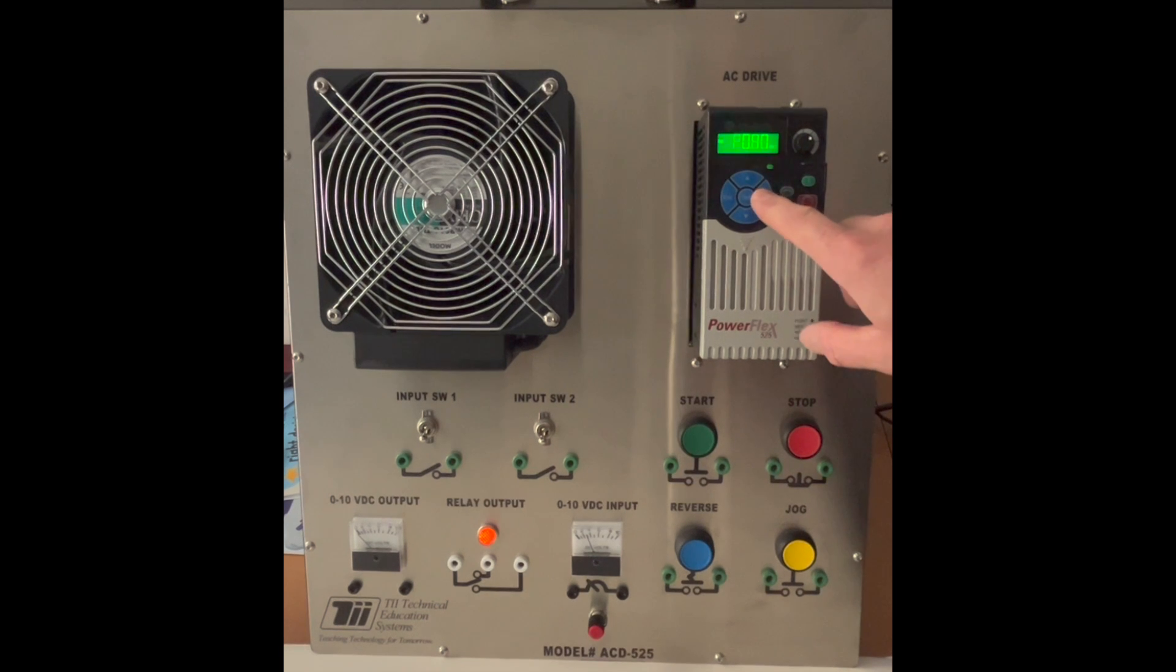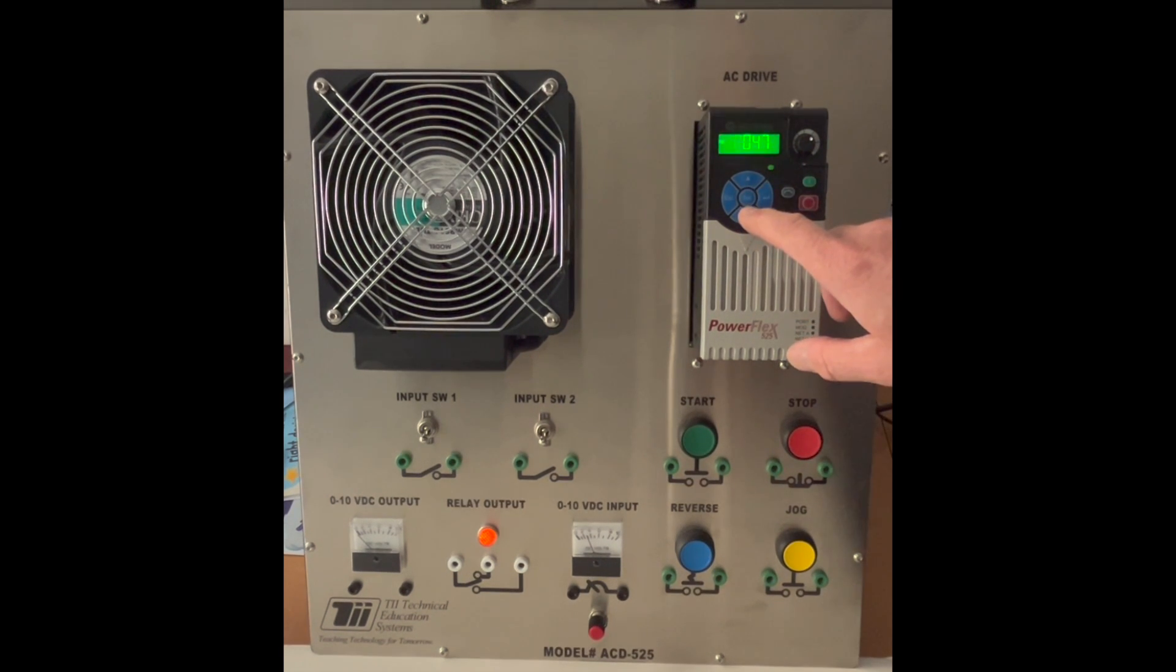So what we're going to do is we're going to enter into the menu. To set the speed reference we want to go into P43. We will hit enter. This is set to 1, which means that you're going to use the drive potentiometer right here.